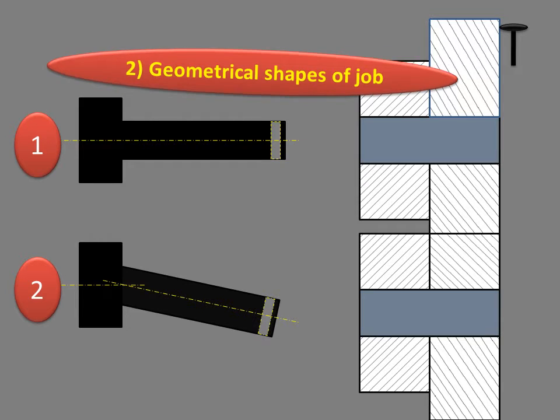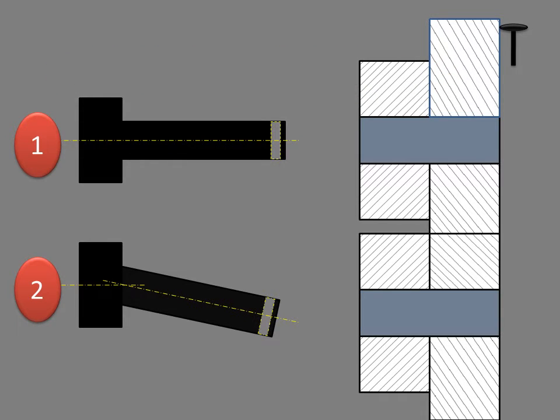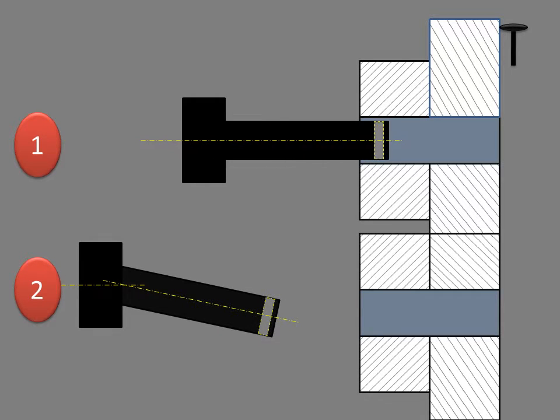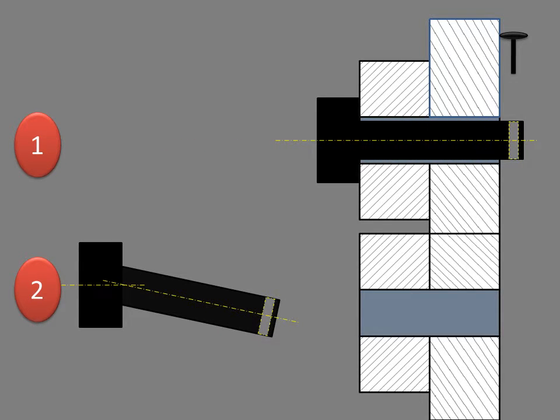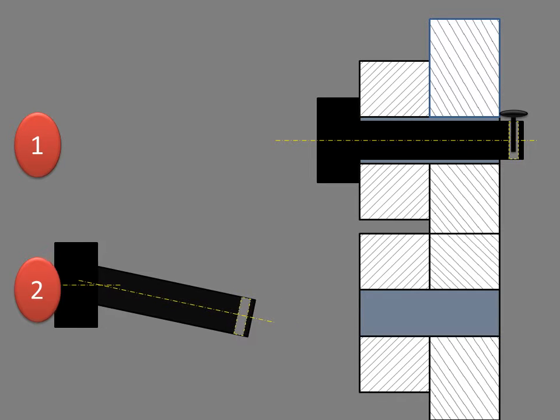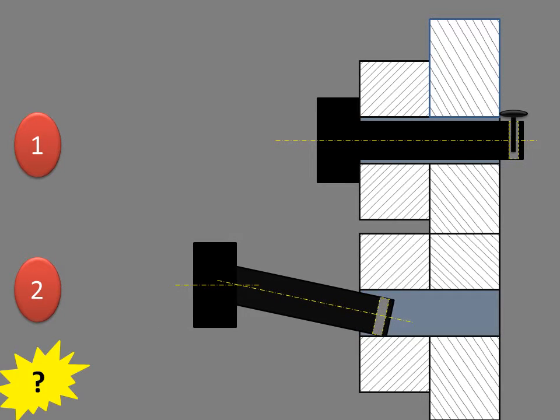Now observe the geometrical shapes of the job. In case one, the bolt length is perpendicular to the bolt head, but in case two it is not. Now look at the assembly. In case one it is being assembled smoothly, but in case two it gets stuck.